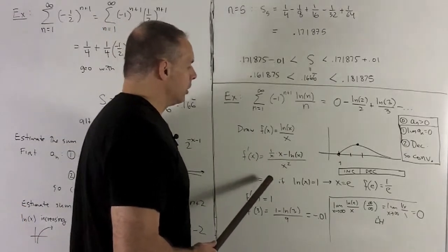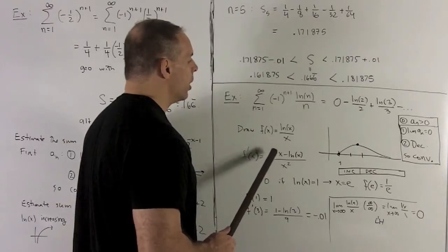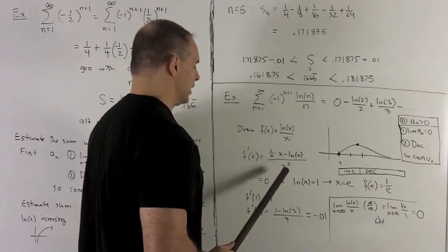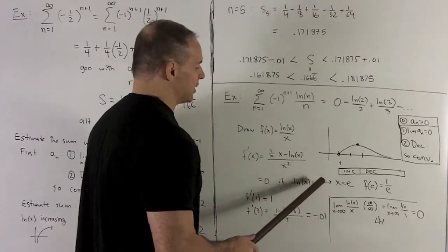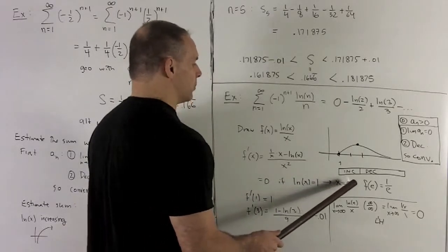So, when will this be equal to 0? It'll be equal to 0 when the top is equal to 0 or when 1 minus natural log of x is equal to 0. Or natural log of x is equal to 1. The only way this can happen is if x is equal to e.